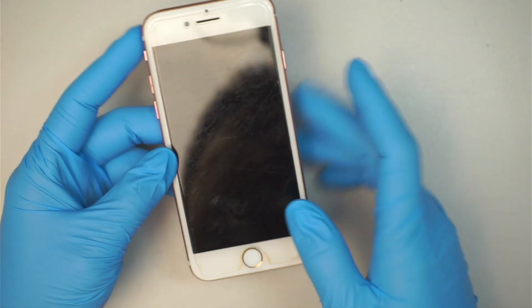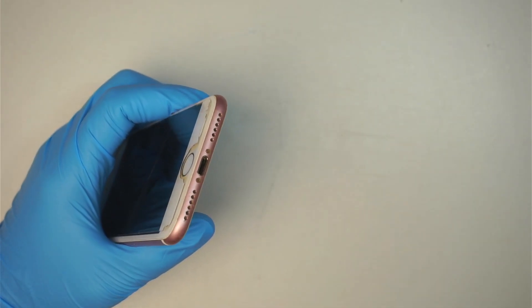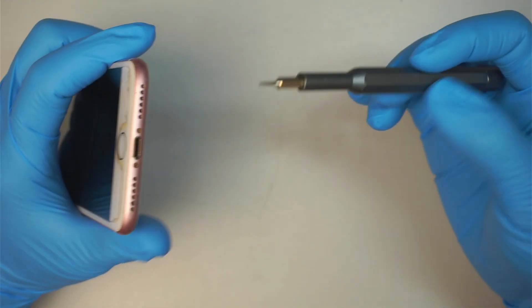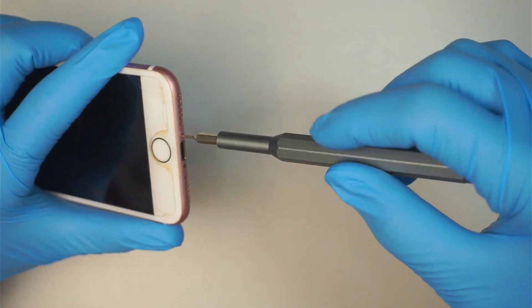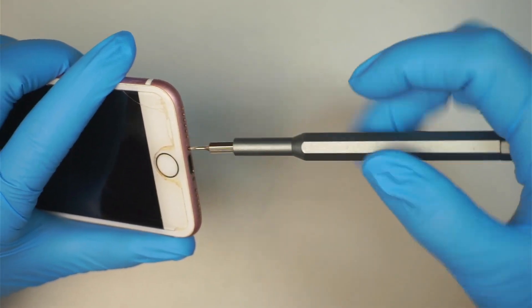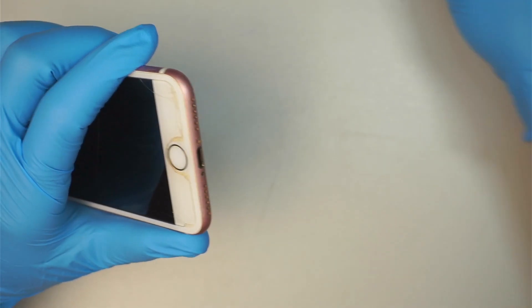Let's go ahead and power off the phone. I'll be using a Pentalobe P2 0.8, the little 5-point star-looking screwdriver here. Go ahead and remove the two screws at the bottom right next to the charging port.